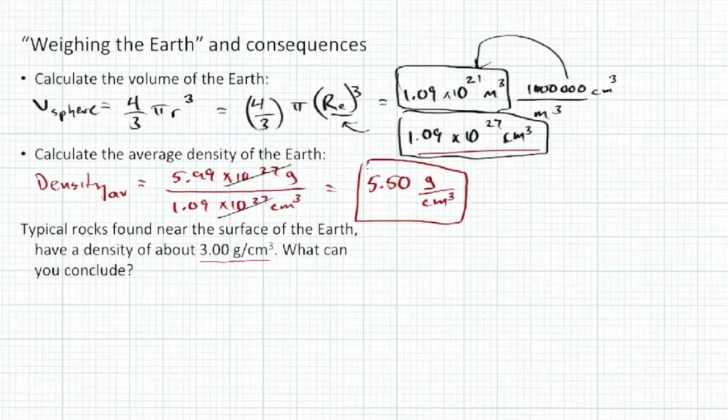Just to give you sort of a reference, a cubic centimeter of water, a centimeter times a centimeter times a centimeter, about the size of a pea or maybe a little bit bigger, weighs one gram. So on average our earth, if it were all uniform throughout, would have 5.5 times the density of water.